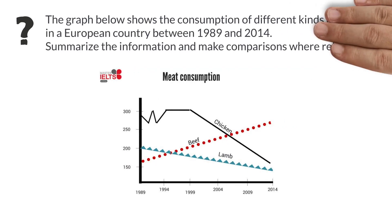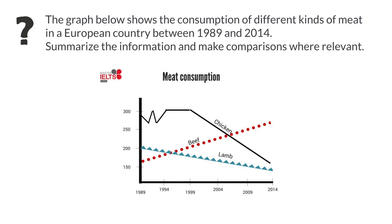We will write a description based on the question below. The graph below shows the consumption of different kinds of meat in a European country between 1989 and 2014. Summarize the information and make comparisons where relevant.